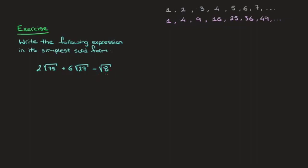In a previous video we've already seen how to write a square root in its simplest form. But in this case we have several square roots or surds which are being multiplied by some number and added or subtracted from each other. So let's see how to do this.